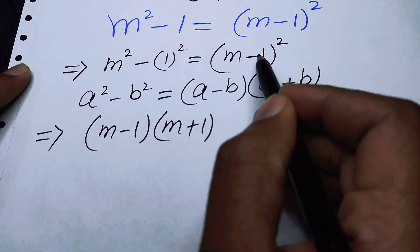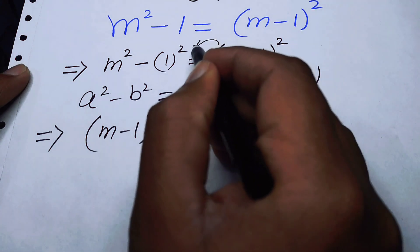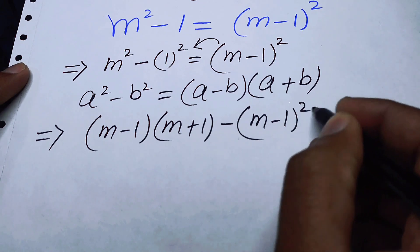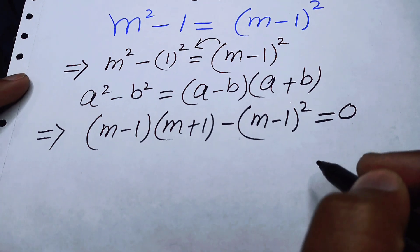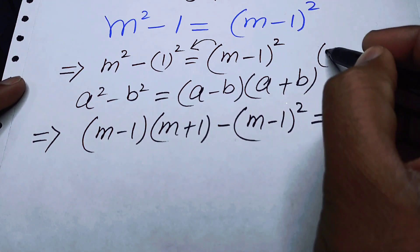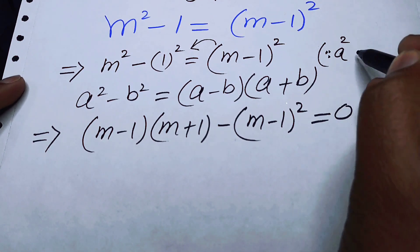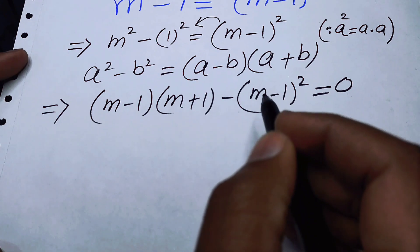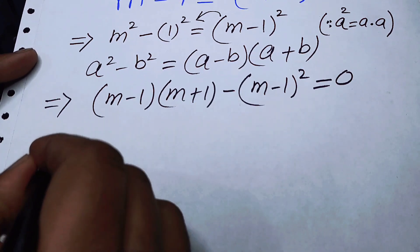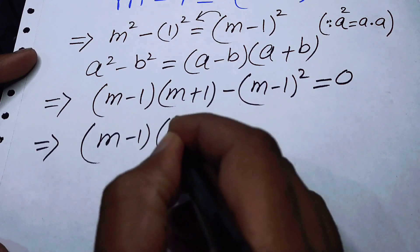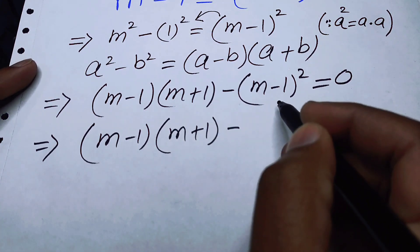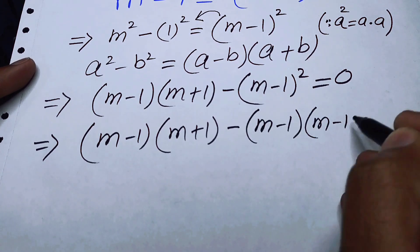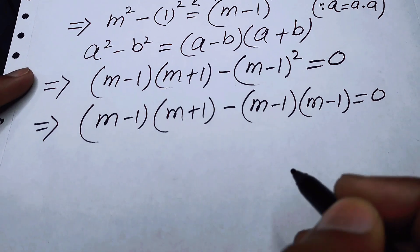After that, we take the term on the right hand side over to the left hand side, and it becomes m minus one times m plus one, minus m minus one whole squared, is equal to zero. Since a squared equals a times a, we break the square and write this as m minus one times m plus one, minus m minus one times m minus one, is equal to zero.